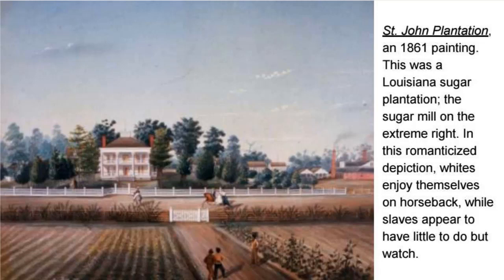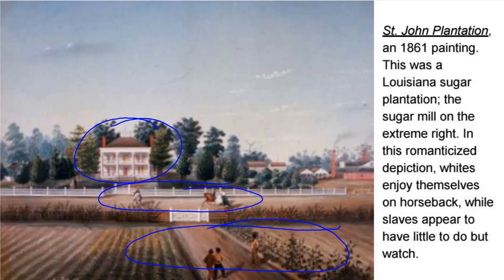This painting from 1861, just as the Civil War was getting underway, depicts such a rich household that not only do they have slaves working in the fields while they comfortably ride horses for entertainment outside their fancy Greco-Roman plantation home, but off to the side they have even more slaves working inside their own sugar mill. This is in Louisiana — a self-sustaining empire of sugar production. This is one of those Bill Gates, Jeff Bezos type rich plantation owners.